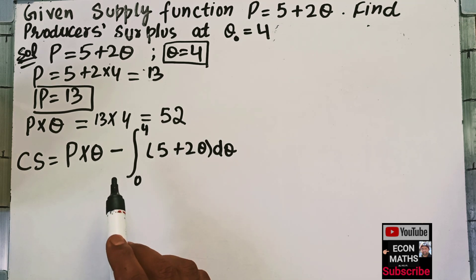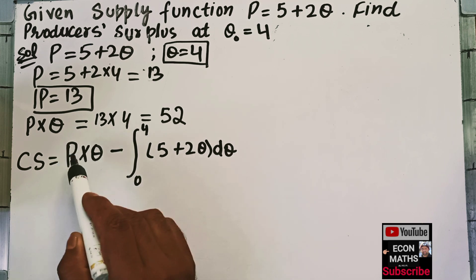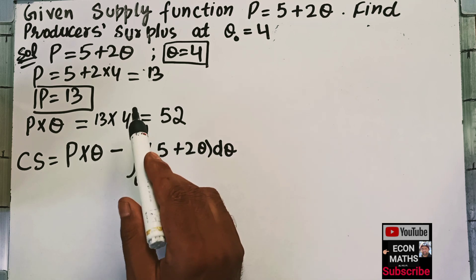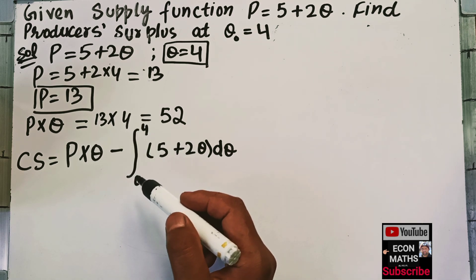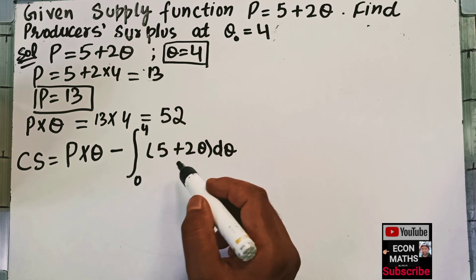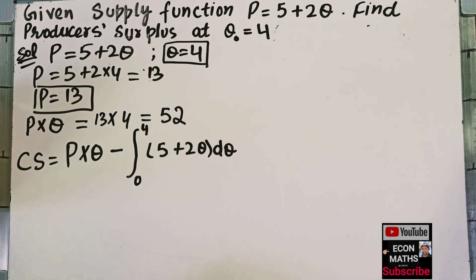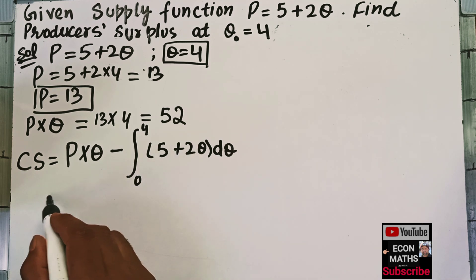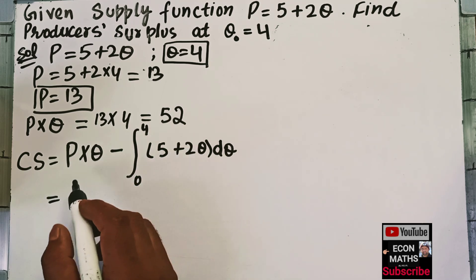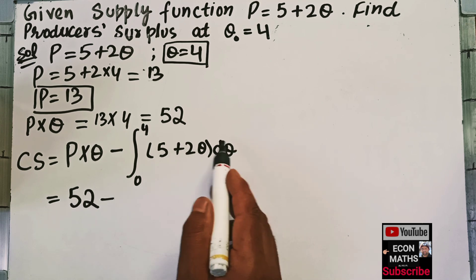Producer surplus = P × Q minus the definite integral of the supply function from 0 to the equilibrium quantity. P × Q, which is also the total revenue, is 52. Now we will integrate 5 + 2Q with respect to Q from 0 to 4.